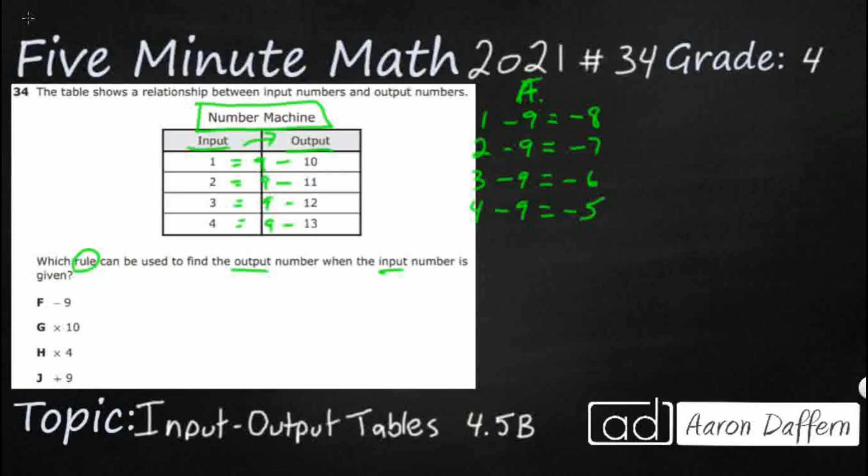And we don't go from our output to our input. We start here. That's why it's called the input. We start with our input. So that's why it's incorrect because they just go the opposite direction. But we've at least eliminated one of our answer choices.